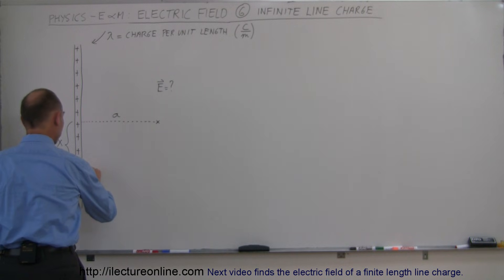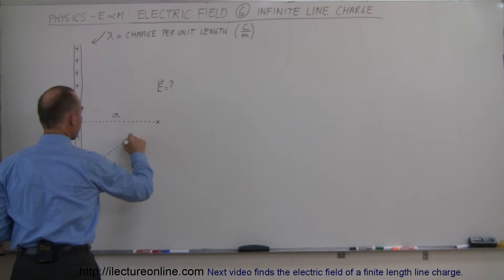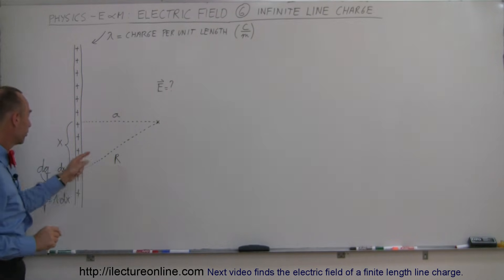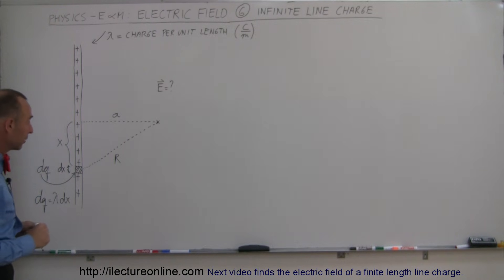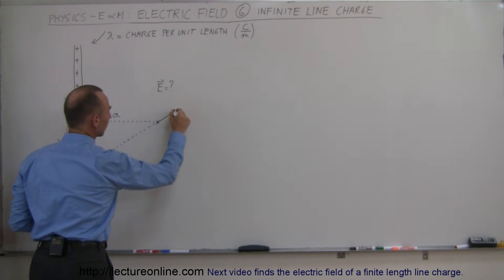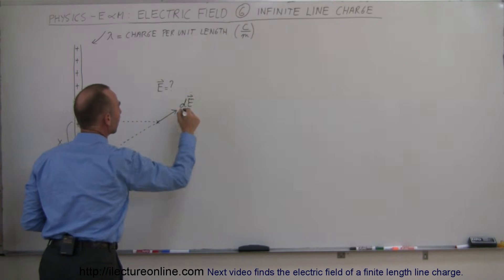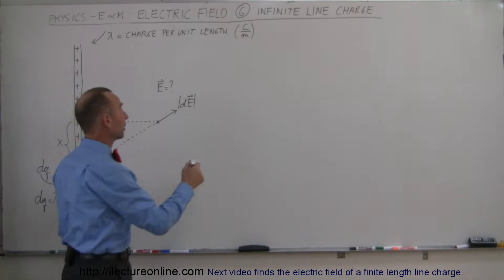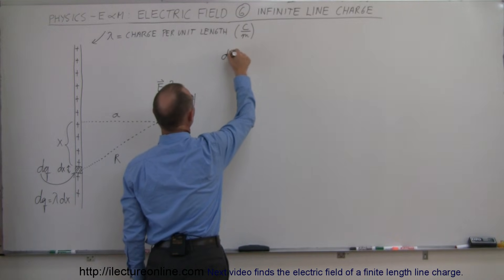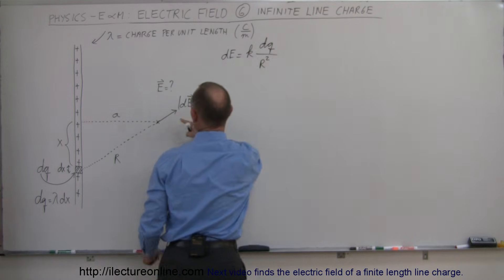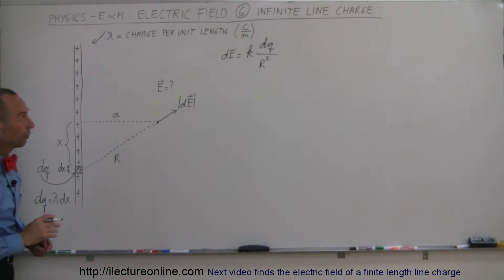Now let's draw a line from that little segment to the point of interest. We can say that distance from there to there, let's call that R. And of course R is going to be related to X and A using the Pythagorean theorem. Now we can say that the amount of electric field we experience at this location due to this small segment is going to be a small amount of DE. Using the general equation for the electric field, DE — the magnitude of DE — is equal to K times the charge that causes it, which is DQ, divided by the distance squared, so divided by R squared.